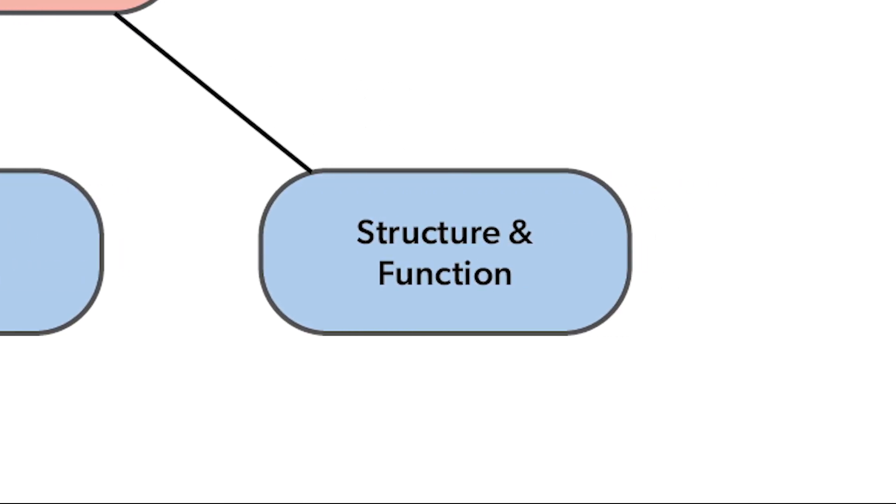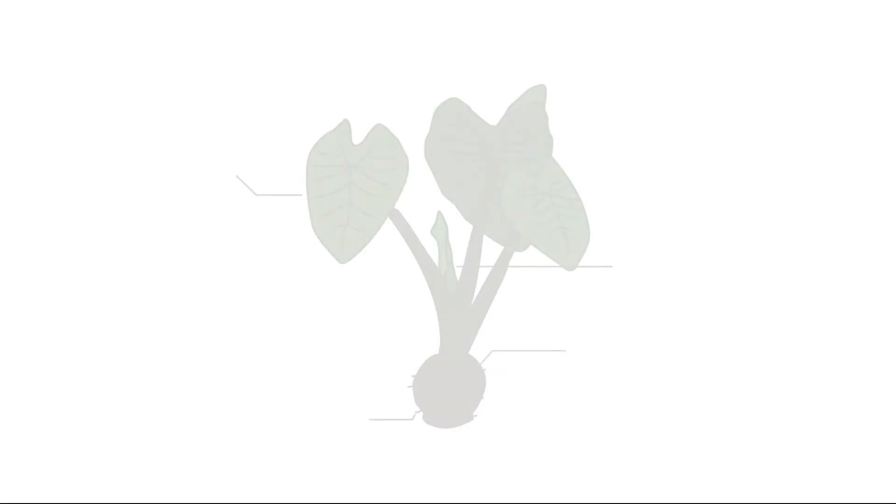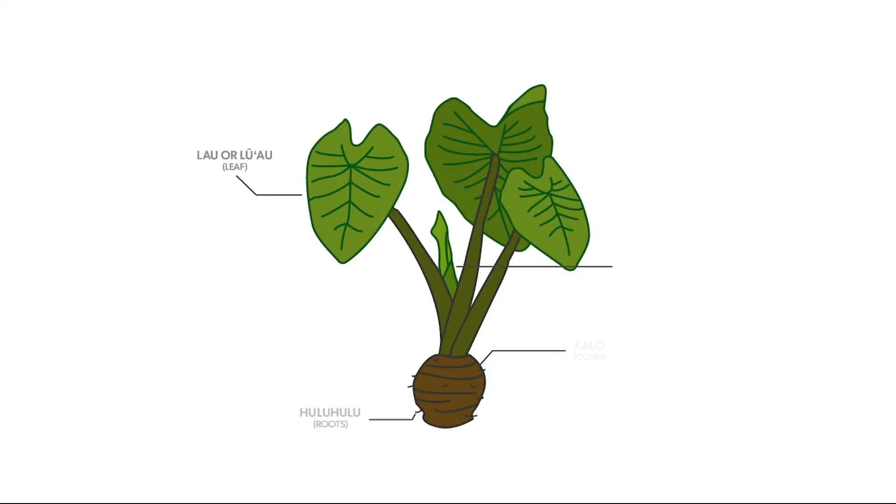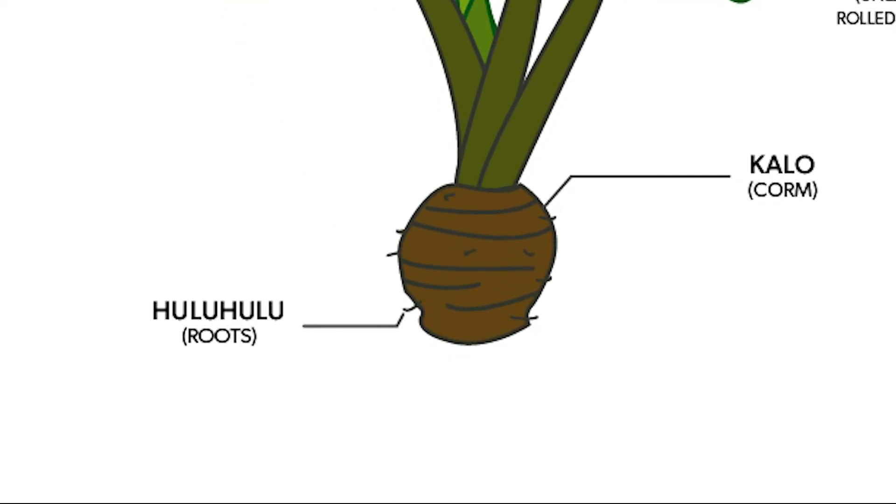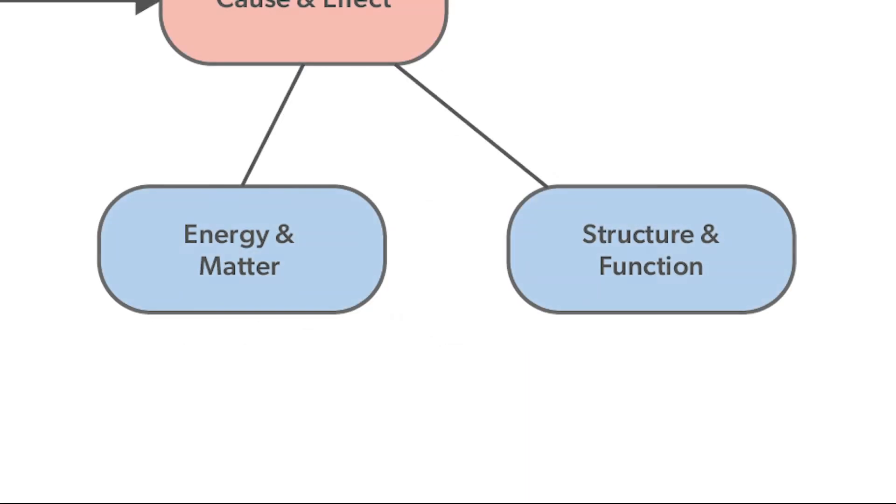Structure and function can explain why a pattern happens. Structure can be an arrangement of parts that are put together. Structure can also be the form or shape of something. The structure of things is related to how they function. Structure and function relationships help us understand why systems work. The Kahlo plant has an overall structure that is made up of many parts. Each part of the Kahlo plant has its own structure that is related to what it does. For example, the long, narrow hulu-hulu, or roots, help the Kahlo stay anchored in the ground and provide a way to take in water. Scientists use these two cross-cutting concepts, energy and matter, and structure and function, to explain why systems work.